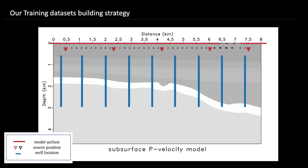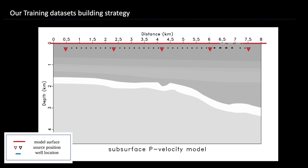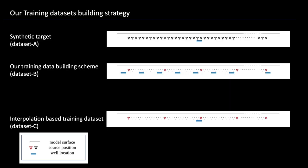And because these receivers have different surrounding velocity, we involve the overall variables of velocity potentially, and we also get more training datasets with a very low computational cost. To compare the effectiveness of our training dataset, we extract the intersection of our training dataset, which is dataset B, and the target dataset, which is dataset A. The intersection of them is just the training dataset of interpolated based learning strategy. We call it dataset C.